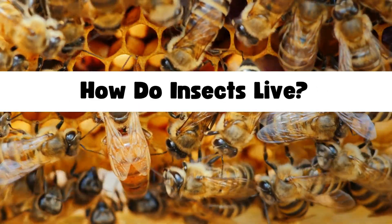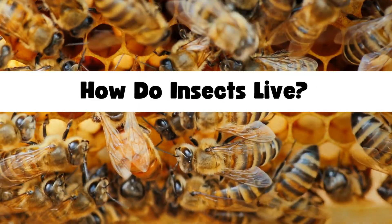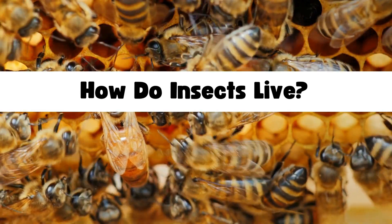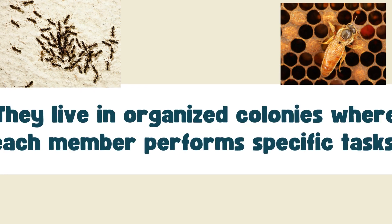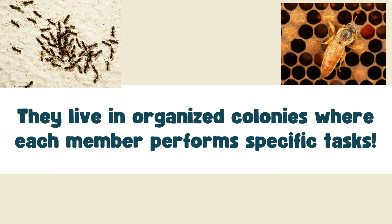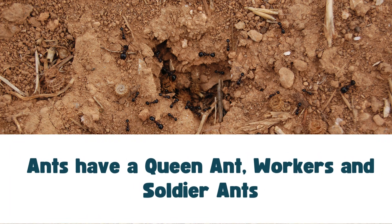Where do these insects live? How do they live? Insects live in organized colonies where each member performs specific tasks. For instance, ants have a queen ant, worker ant, and soldier ant.